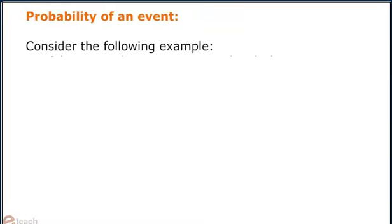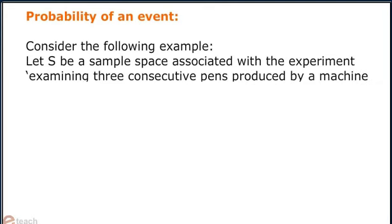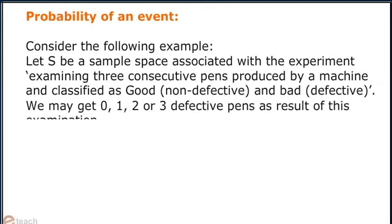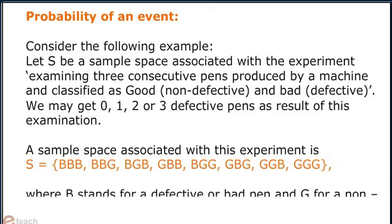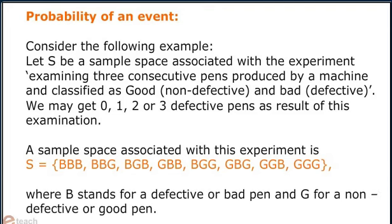Consider the following example. Let S be a sample space associated with the experiment of examining 3 consecutive pens produced by a machine and classified as good and bad. We may get 0, 1, 2 or 3 defective pens as a result of this examination. A sample space associated with this experiment is S, as shown. Here B stands for a defective or bad pen and G for a non-defective or good pen.